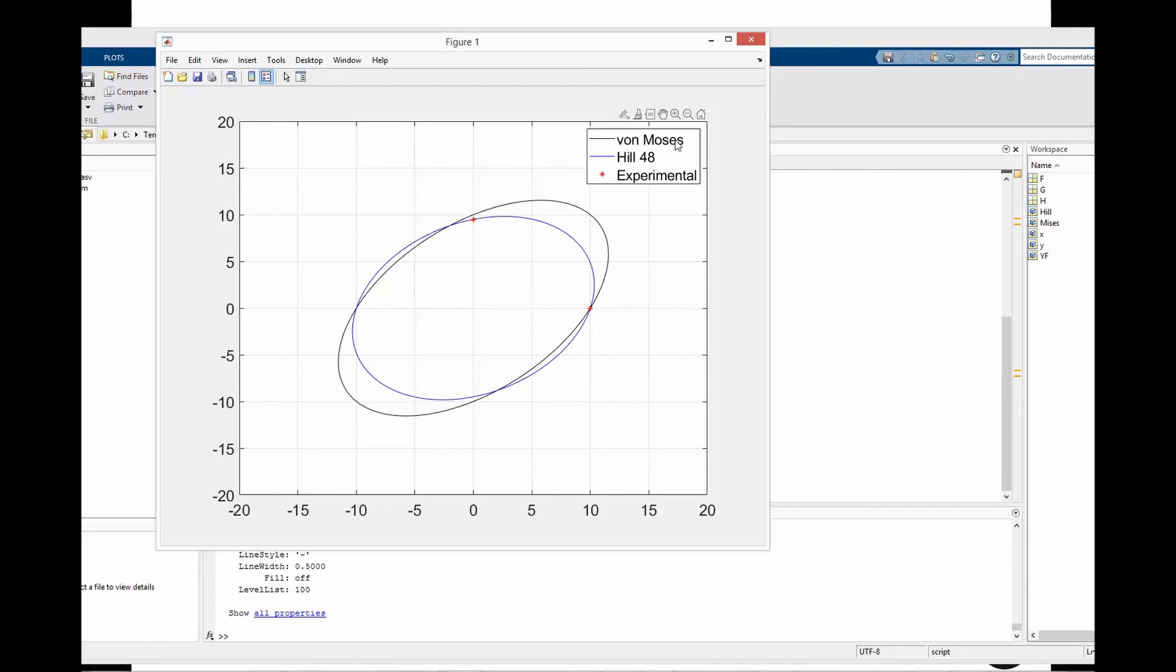However von Mises yield function only crosses it at zero degree tensile test, and by that this anisotropy at zero degree and 90 degree is captured by Hill48 yield function which could not be captured by typical von Mises yield function.